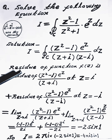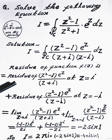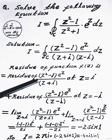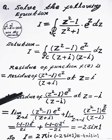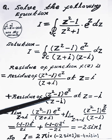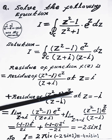The residue of the function f(z) is the total residue of this function at z equal to i, plus the residue of this function at z equal to minus i.